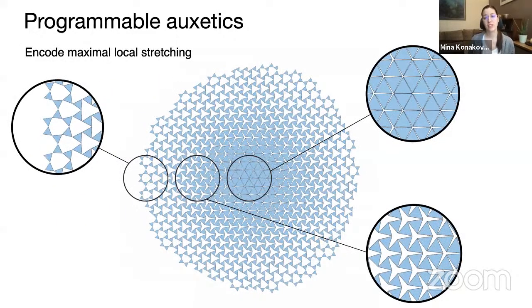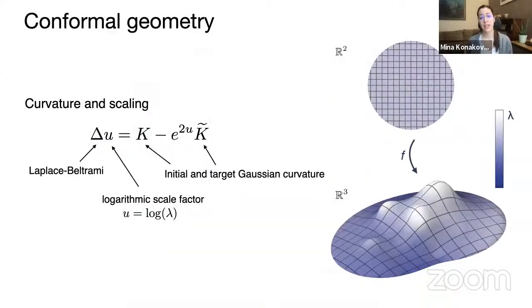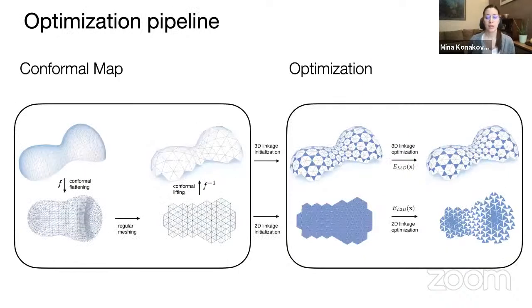In the programmable auxetics, we encode the maximal local stretching that the material can have. And in the regions, for example, for this half sphere in the regions where we have triangles that are small and that are already open in the 2D configuration, there cannot be much more stretching. But in the central region where the triangles are large and they're in the closed configuration, you can already imagine that you can push them out of the plane and scale quite a bit. So there's more scaling that the material can have in the central part. And again, to determine the local stretching that we need depending on the surface, we can use the Yamabe equation and the conformal map.